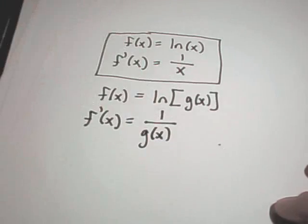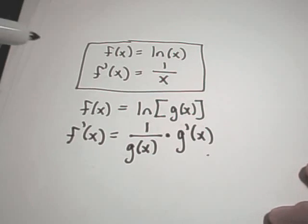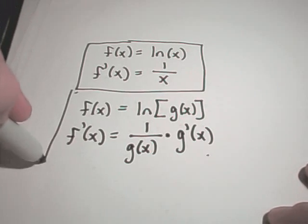The derivative of this logarithmic function will be analogous. You'll get 1 over the stuff on the inside. But by the chain rule, you have to multiply by the derivative of the inside. So another formula to know.